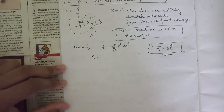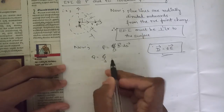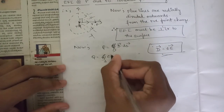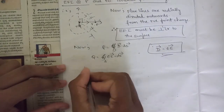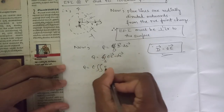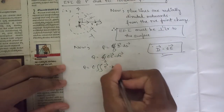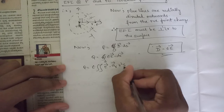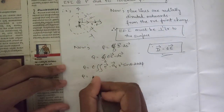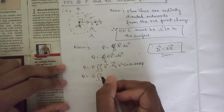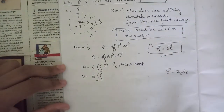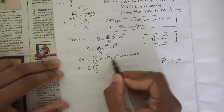We use the relation D equals ε·E from the first module. Substituting, Q equals the closed surface integral of ε·E dot ds. Taking ε as a constant outside, the remaining integral has E and the surface integral of ds given as ar r² sinθ dθ dφ. Writing E as Er·ar vector, the dot product ar·ar equals 1.